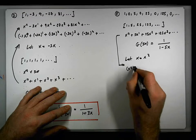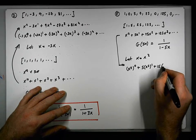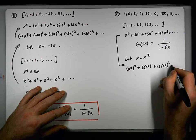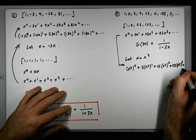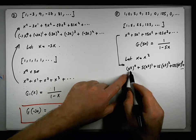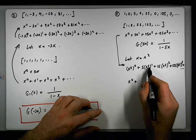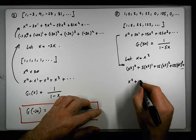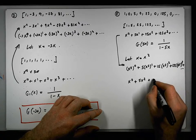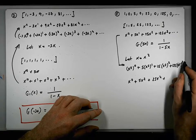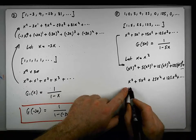...we end up with x squared to the 0 plus 5x squared to the 1 plus 25x squared squared plus 125x squared cubed, and so on. This gives us x to the 0 plus 5x squared plus 25x to the 4 plus 125x to the 6 and so on, which is what we require.